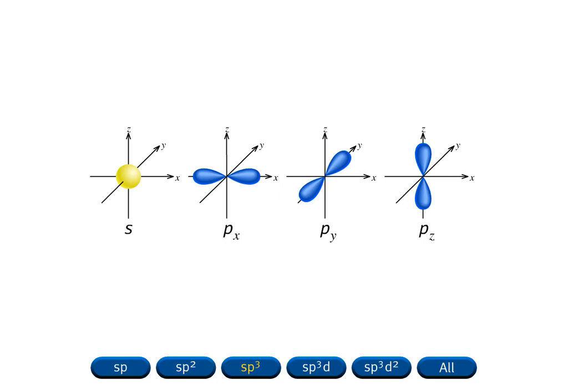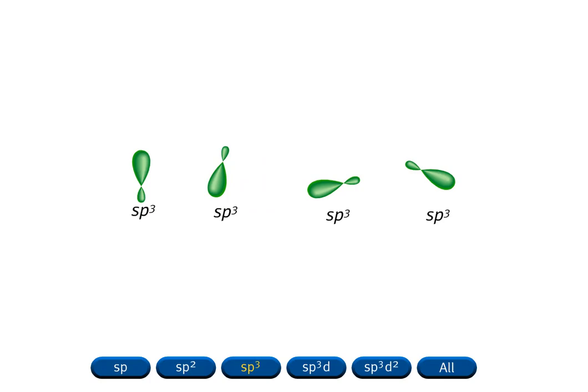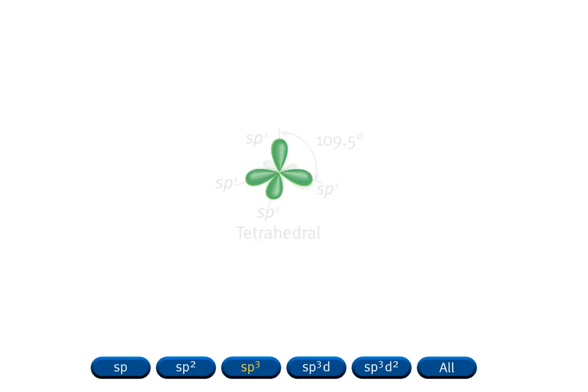Mixing an s orbital with the three p orbitals generates four equivalent sp3 hybrid orbitals. Note that the number of hybrid orbitals produced is equal to the number of atomic orbitals that are hybridized. The set of four sp3 hybrid orbitals has a tetrahedral arrangement. The angles between the orbitals are 109.5 degrees.